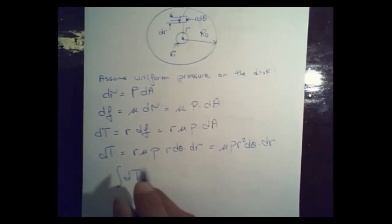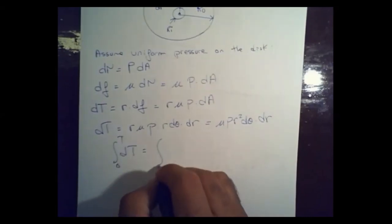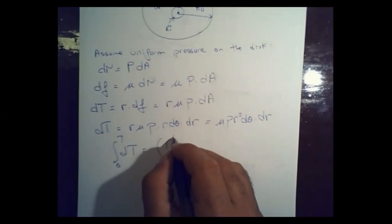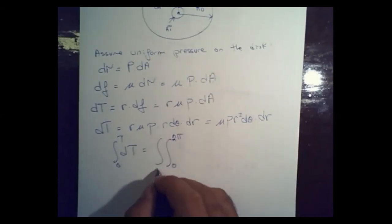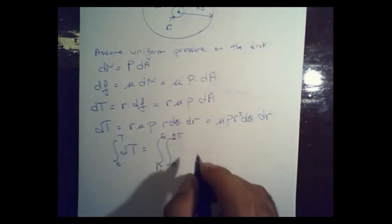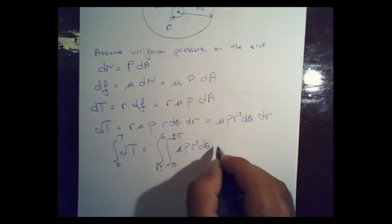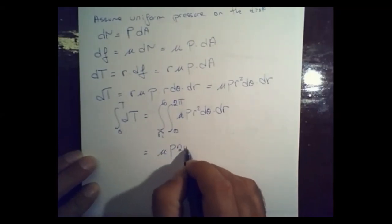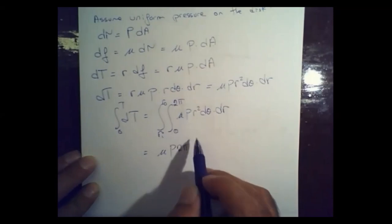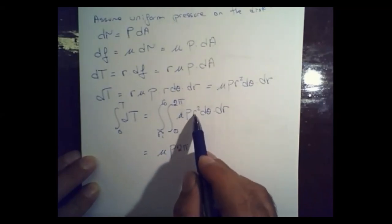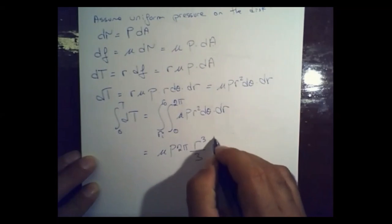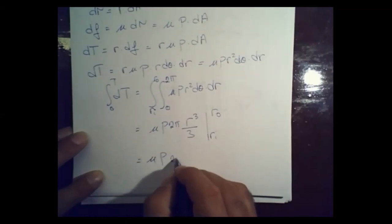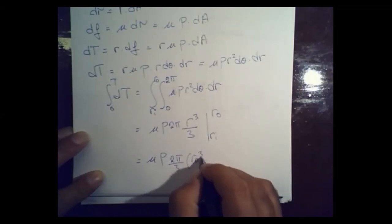Integrating dT, we integrate θ from 0 to 2π and r from ri to ro. Since we assume uniform pressure, p is constant and comes outside the integral. Integrating r² gives r³/3, so the total torque is T = μ·p·(2π/3)·(ro³ - ri³).